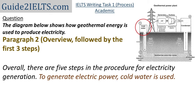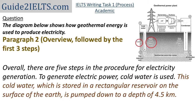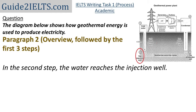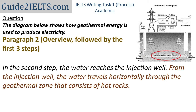Now I'll start with one step at a time. In the first step, we see that there is cold water in some kind of a reservoir. So we'll write it as: 'To generate electric power, cold water is used. This cold water, which is stored in a rectangular reservoir on the surface of the earth, is pumped down to a depth of 4.5 kilometers.' We'll next describe the second step. In the second step, the water reaches the injection well. From the injection well, the water travels horizontally through the geothermal zone that consists of hot rocks.